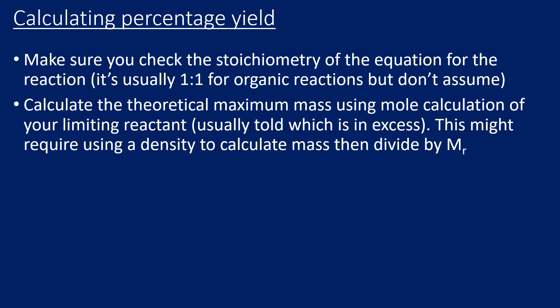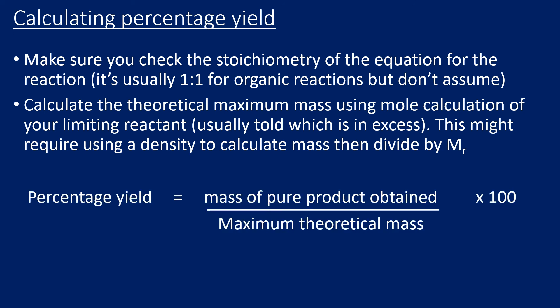Once you have the moles of your reactants, you can calculate the mass of your product — this is your theoretical maximum mass. To calculate percentage yield, take the mass obtained in the practical, divide by the theoretical maximum mass (which will always be larger than the actual yield), and multiply by 100 to express it as a percentage.